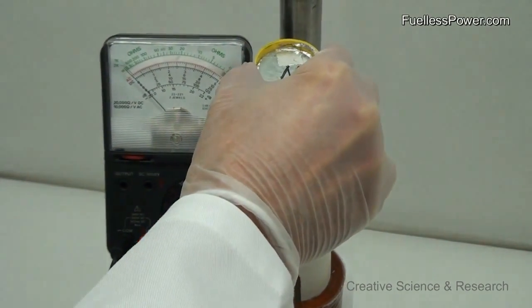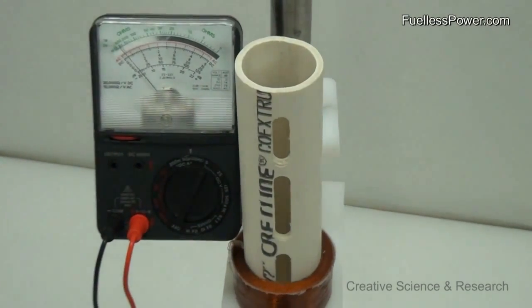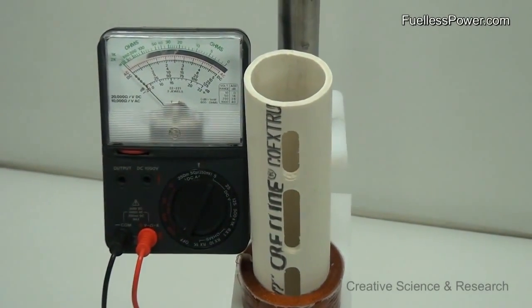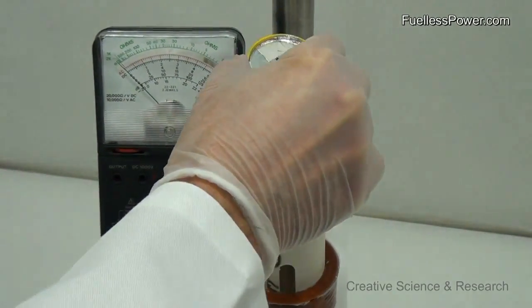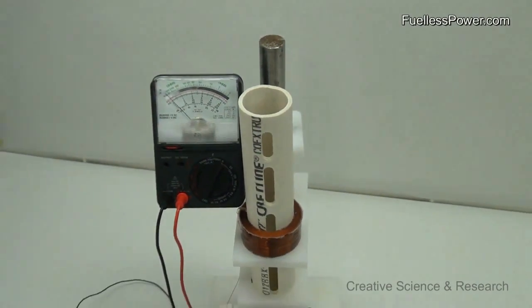Now no matter how many times I drop the magnet through the pipe, the speed of the magnet passing the generator coil will always be the same. Now this is very important to remember.